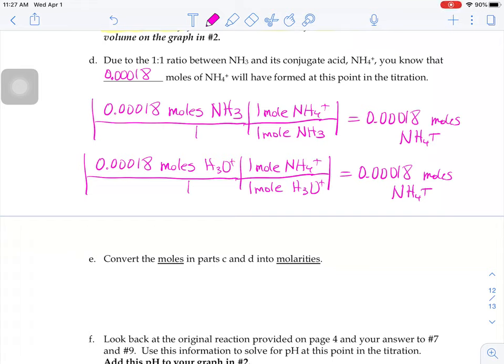This is the last part. Remember how we said we were in the buffer zone of our titration, where we have both an acid and a base. We had that excess NH3 and we also had the NH4+ that had formed at this point in the reaction. What we need to do is convert those moles of our base and our acid that have formed into molarities because we're going to use an ice table here.